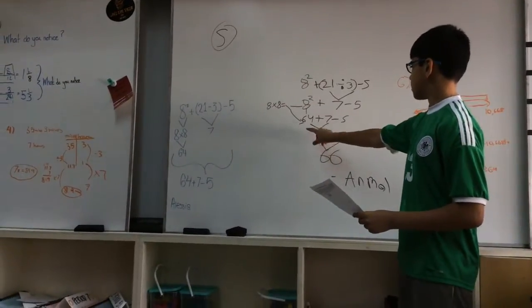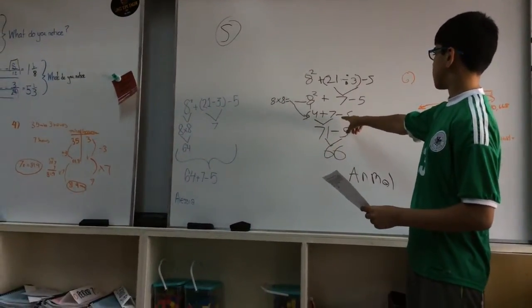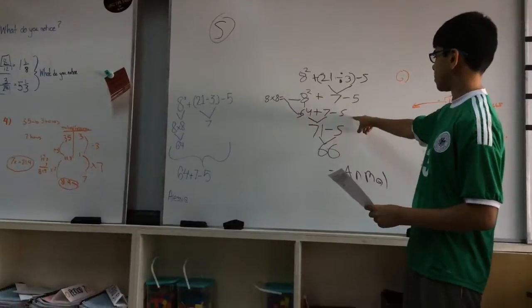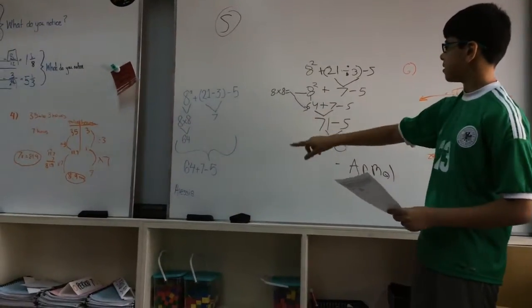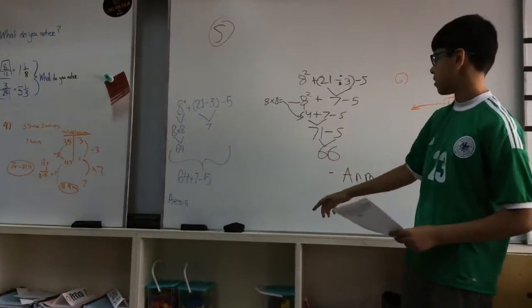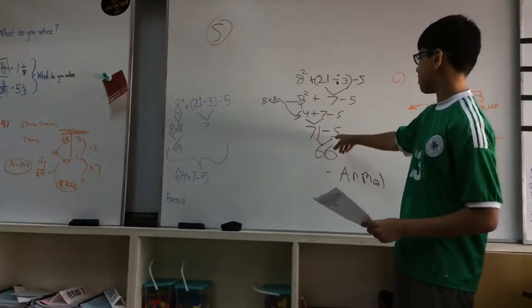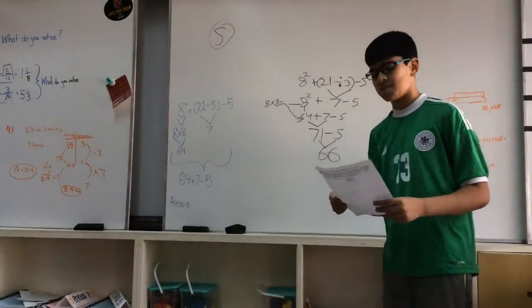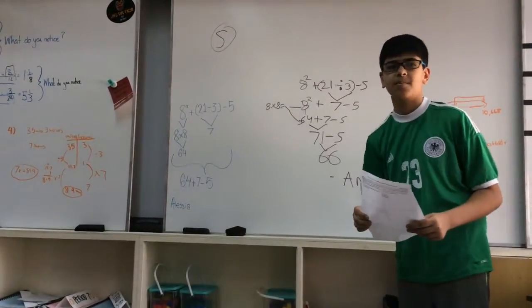And then it's 64 plus 7 minus 5. 64 plus 7 equals 71, and 71 minus 5 equals 66 plus 4.